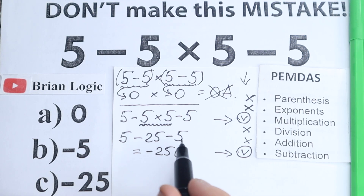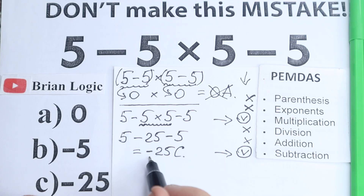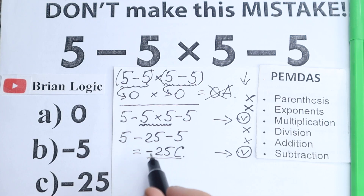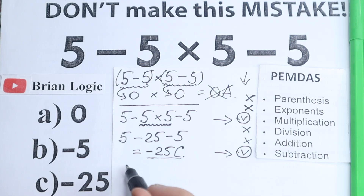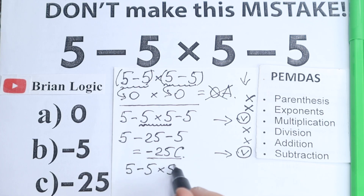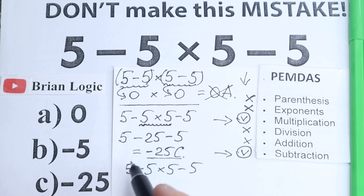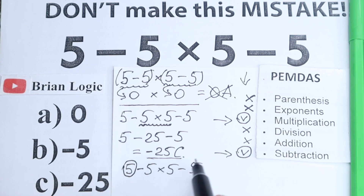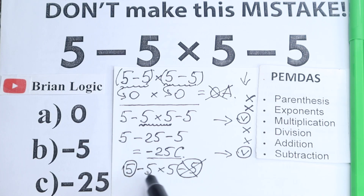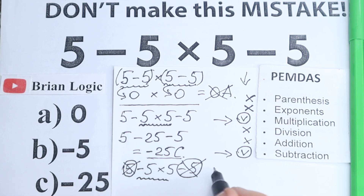With this PEMDAS explanation, we get Option C: negative 25. I also want to show a really interesting algebra trick. We have 5 minus 5 times 5 minus 5. In algebra, if we have an expression with a positive term at the beginning and a matching negative term at the end, we can cancel them. The first 5 and the last negative 5 cancel, leaving minus 5 times 5, which equals negative 25.